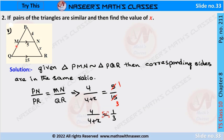Two similar triangles PQR and PMN are given. We have to find the value of x. We already know that if two triangles are similar, then the corresponding sides are in the same ratio. So we can write PN by PR is equal to MN by QR. Now we substitute the given values: 4 by 4 plus x is equal to 5 by 15. We cancel 5 ones are 5 and 5 threes are 15, and we get 4 by 4 plus x is equal to 1 by 3.